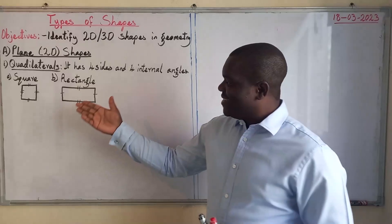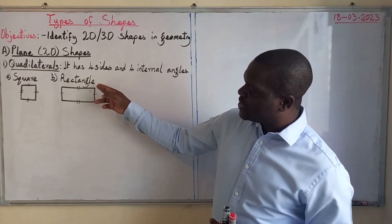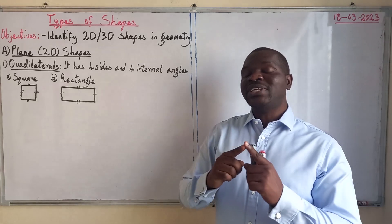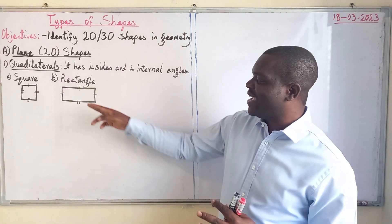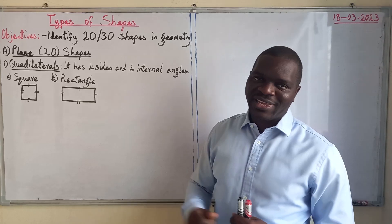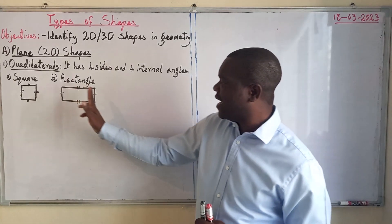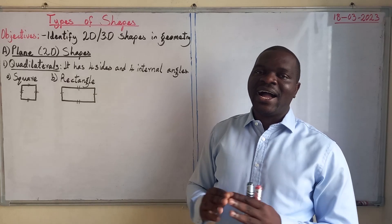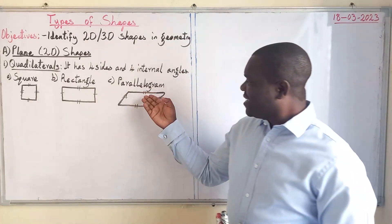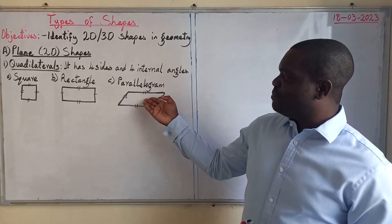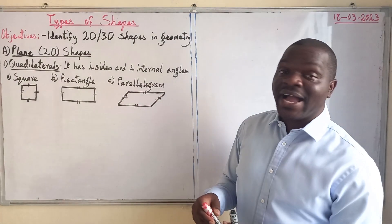The next figure is a rectangle. A rectangle has two pairs of opposite sides which are parallel to each other and congruent — congruent means they are equal in length. This side and this side are equal, while the other pair of opposite sides are also equal and run parallel to each other.